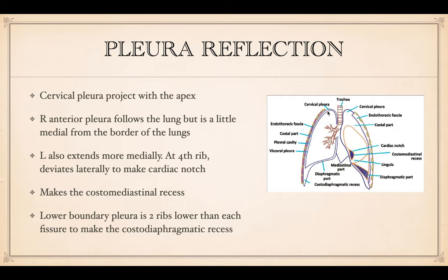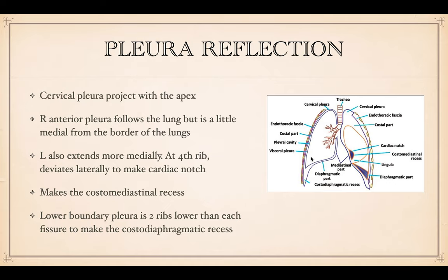The cervical pleura projects with the apex of the lungs into the neck, just behind the clavicular area. The right anterior pleura follows the lung but is a little bit medial from the border. The left also extends a little more medially, but deviates laterally at the fourth rib, making the notch, and then deviates further down. That is usually two ribs lower for the lower boundary pleura, to make the costodiaphragmatic recess. The little gap in the sternal area, the costomediastinal area, makes the costomediastinal recess. These recesses help line the surface so when the lungs expand, there's no friction.